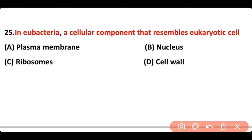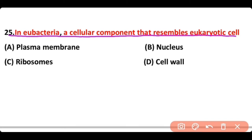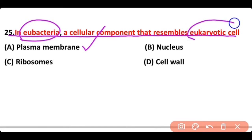Question number 25. In eubacteria, the cellular component that resembles eukaryotic cells — plasma membrane, nucleus, ribosome, or cell wall? The correct answer is option A. The plasma membrane of eubacteria as well as eukaryotic cells is made up of phospholipids, proteins, and a small amount of polysaccharides.